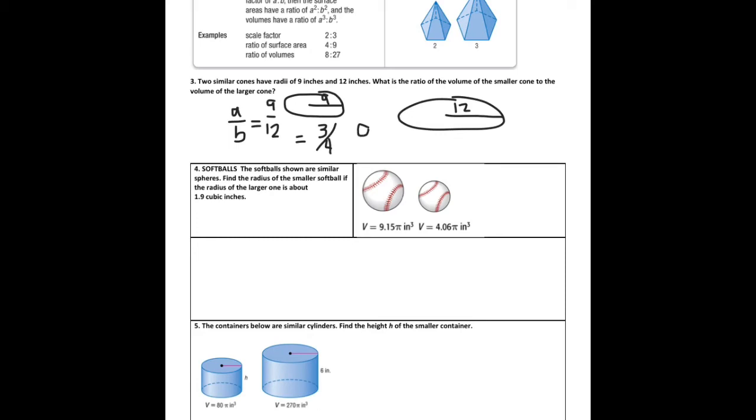I want to find the a³ to b³ ratio. So a³, 3³ is 27 over b³, 4³ is 64. So what is the ratio of the volumes of the smaller cone to the larger cone? That would be 27 to 64.